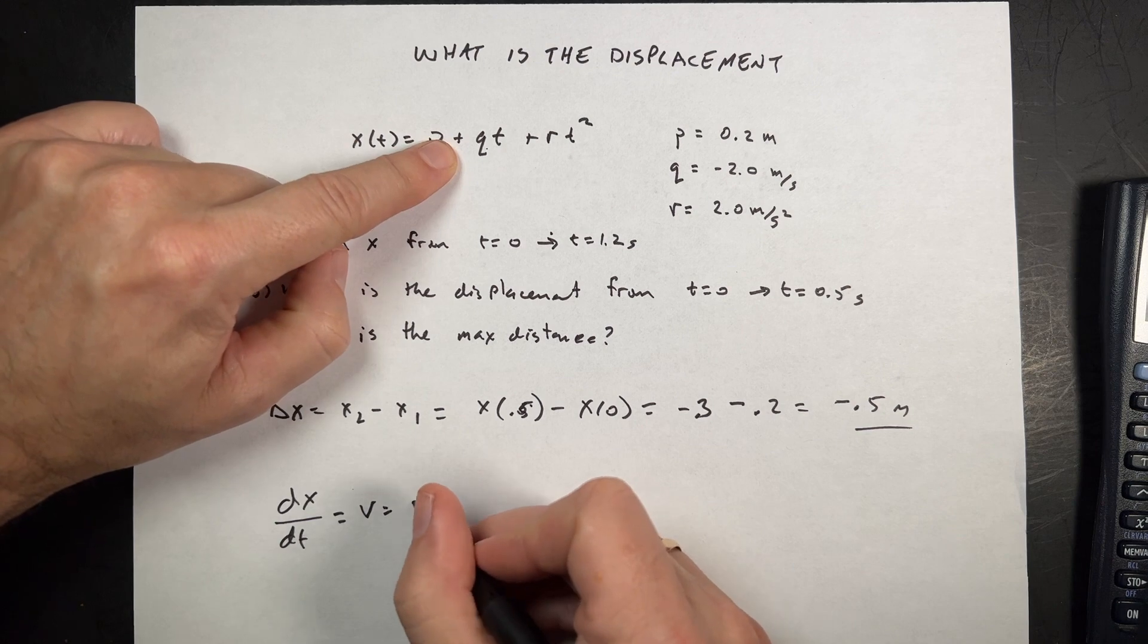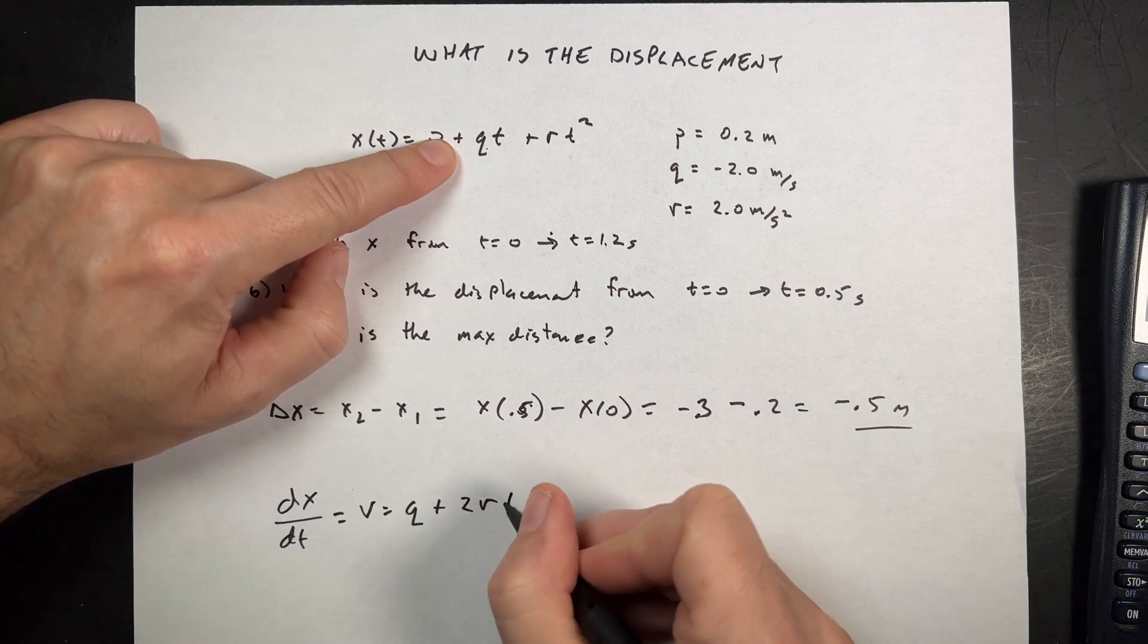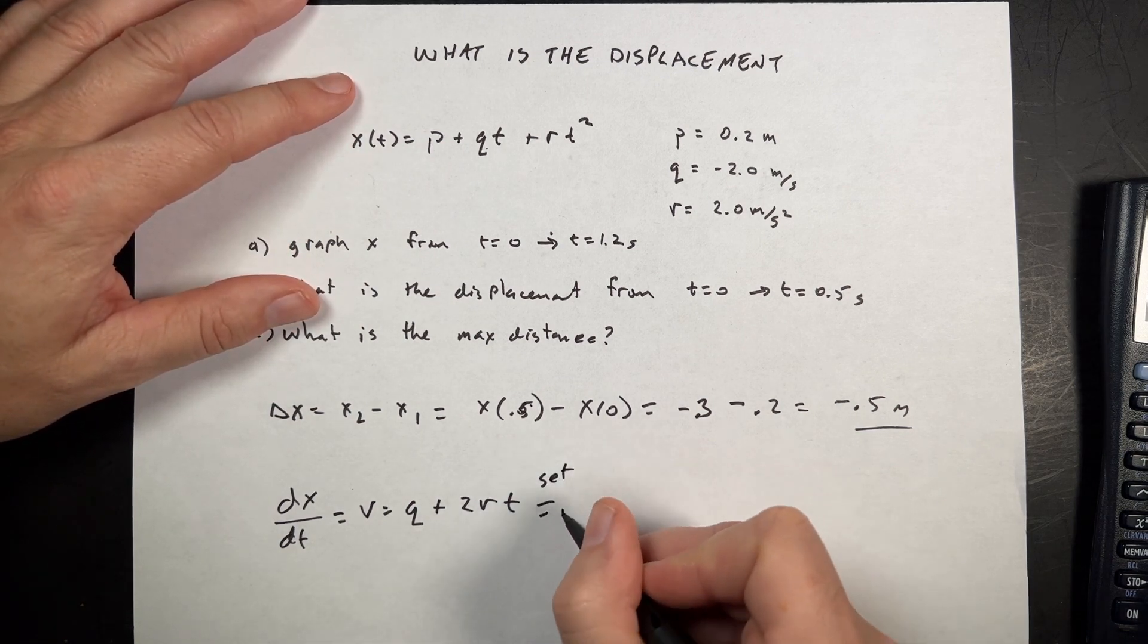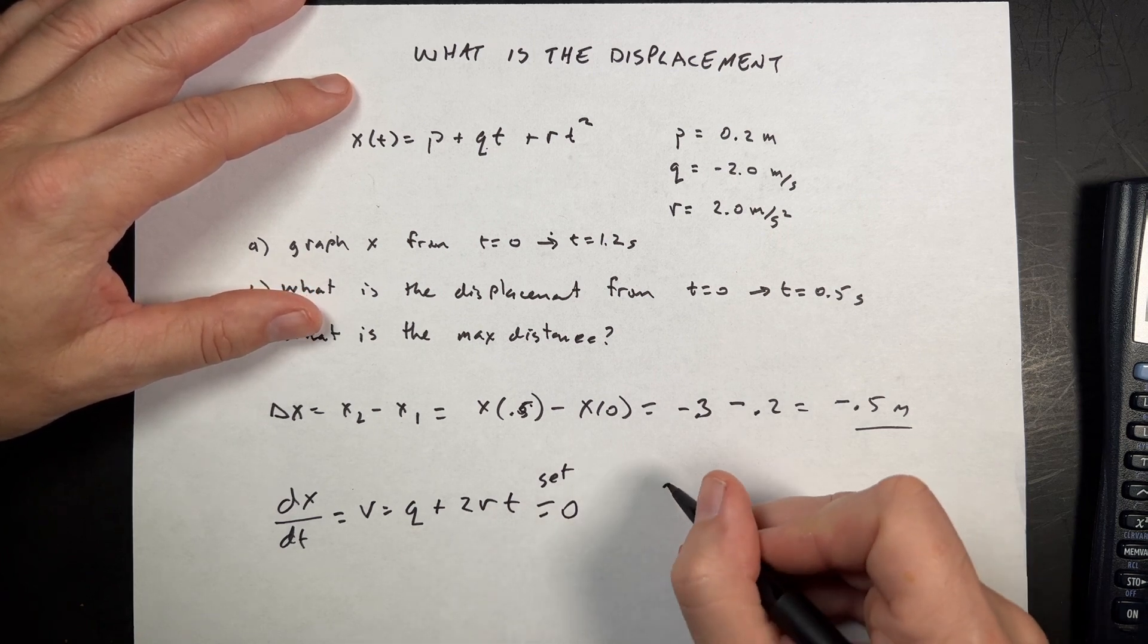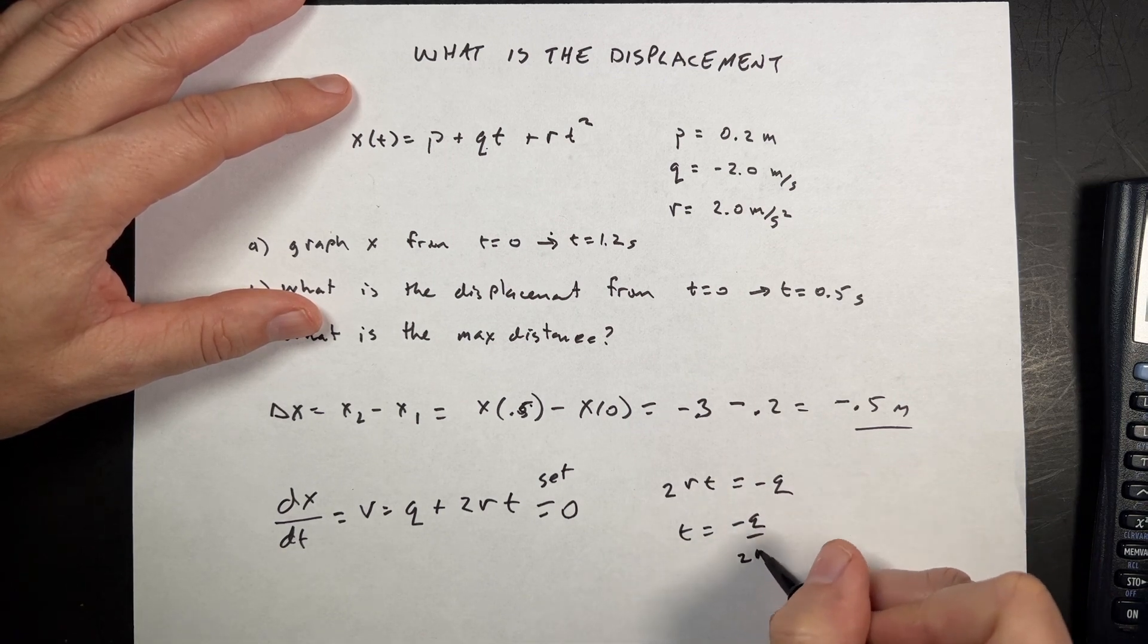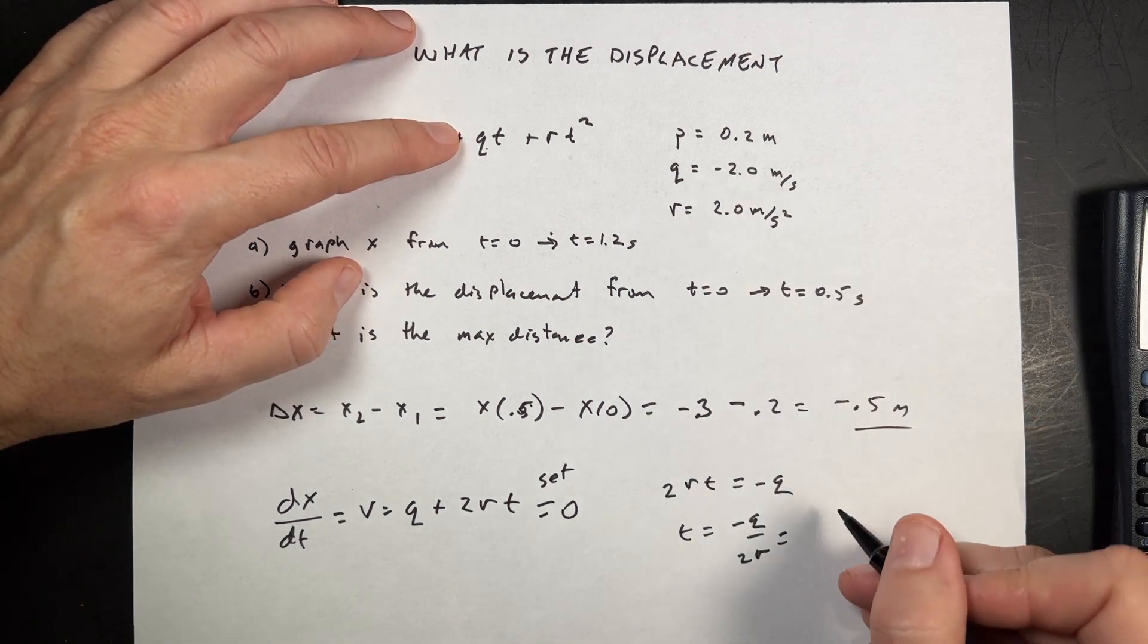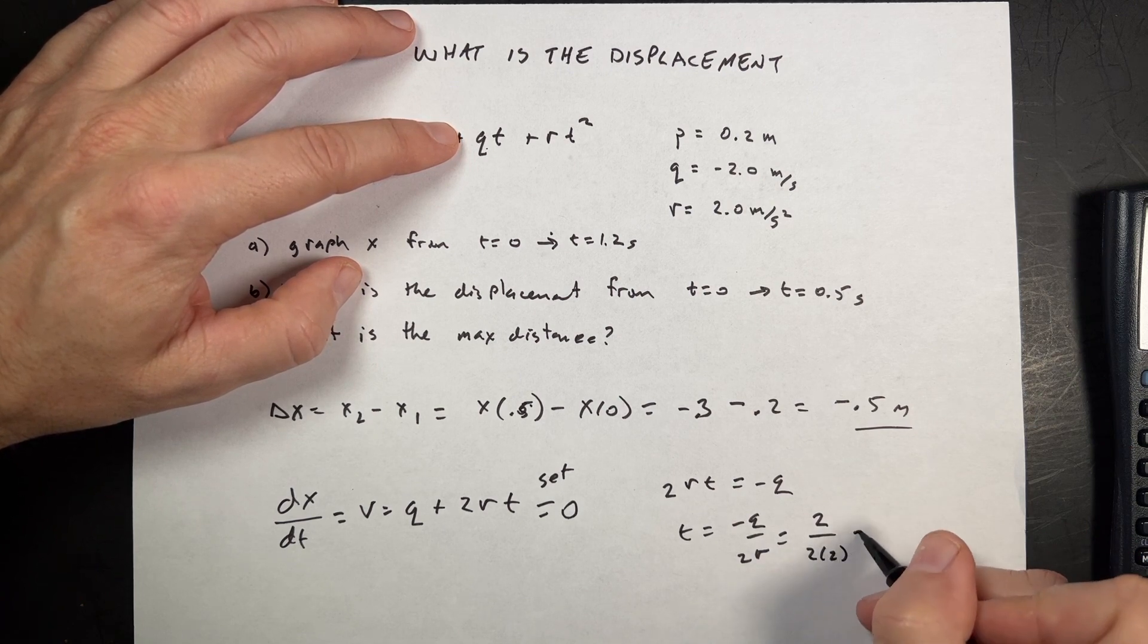So dX/dt is the velocity. And that's just going to be Q plus 2R times T. Now I want to say when is this, I'm going to set this equal to 0 and solve for T. So if I do that, I can say 2RT equals negative Q, T equals negative Q over 2R. And if I put that in, I get Q is going to be negative 2, so it's 2 divided by 2 times 2, which is 0.5 seconds.